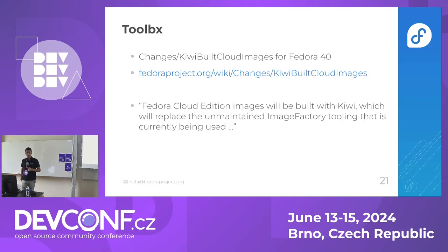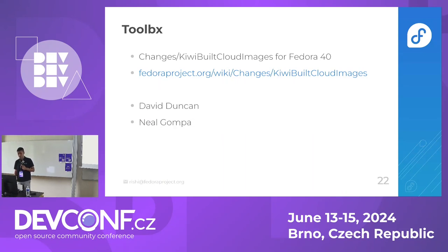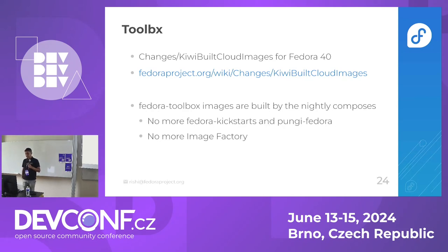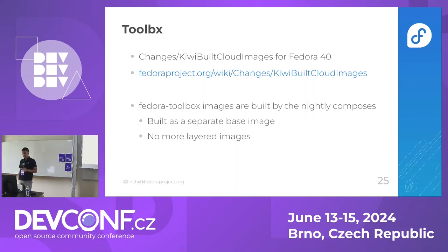So in Fedora 40, we changed everything again. The Fedora Cloud Edition images will be built with Kiwi, which also covers the OCI images and the Fedora Toolbox images — something David Duncan and Neil Gompa from Fedora Cloud were pushing. Now the images are described in Fedora Kiwi descriptions and built with Kiwi, so no more Fedora kickstarts, no more Pungi, no more Image Factory. It's still built as a separate base image with no layering, just the tooling has changed. Kiwi is well maintained and easier to integrate into upstream CI — you just do DNF install kiwi and the description is an XML file.